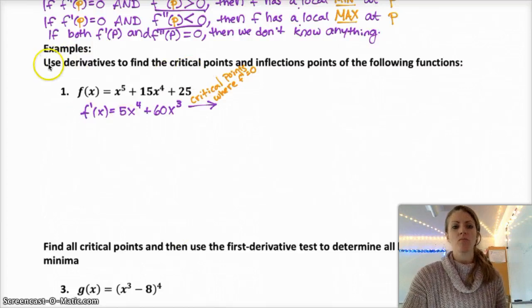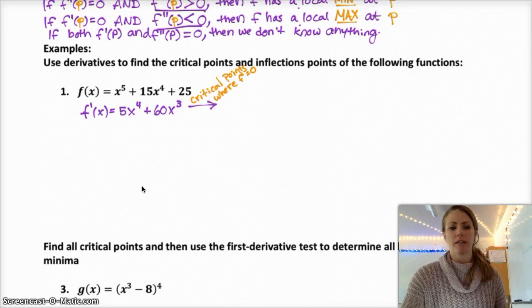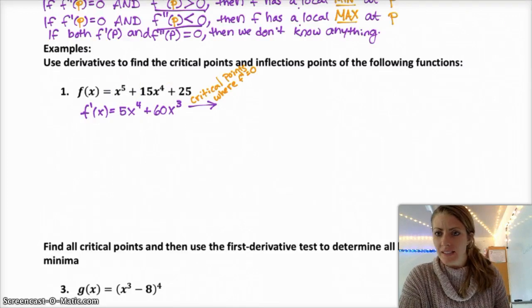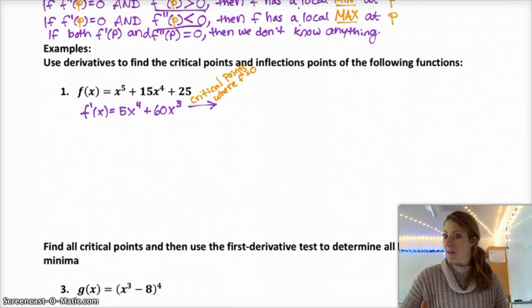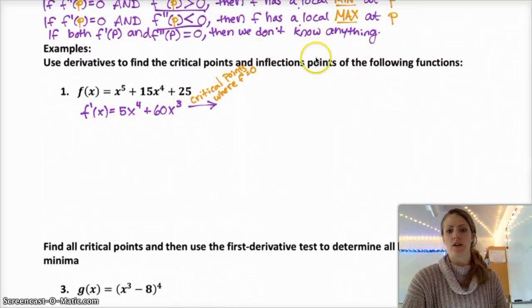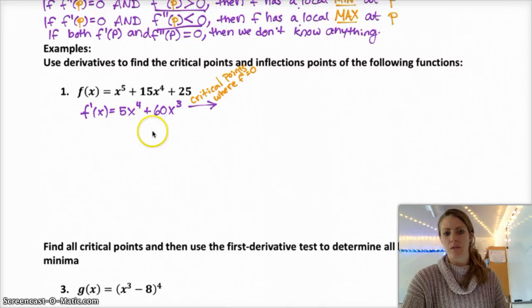The first question says: use derivatives to find the critical points and inflection points of the following functions. The first thing you want to do is find the first derivative and the second derivative. The first derivative will help you find all the critical points, and then the second derivative will help you figure out the inflection points. So I usually like to find f prime first. This one's pretty simple — it's just the power rule. So 5x to the 4th plus 60x cubed is the derivative. And then the second derivative is going to be 20x cubed plus 180x squared.